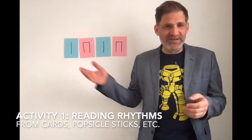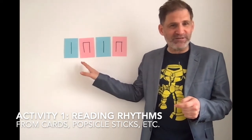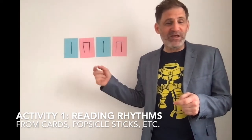The first activity is just reading rhythms. I've tacked a four-beat rhythmic motive up here on the wall. Now, you can use cards, you can write it on a whiteboard, you could even use cards on the floor, or write it on the floor in popsicle sticks. There are lots of different options.